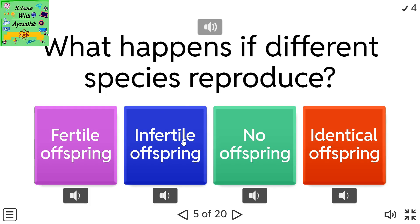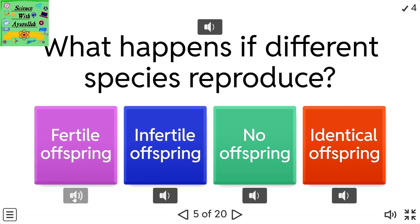What happens if different species reproduce? Options: fertile offspring, infertile offspring, no offspring, identical offspring.